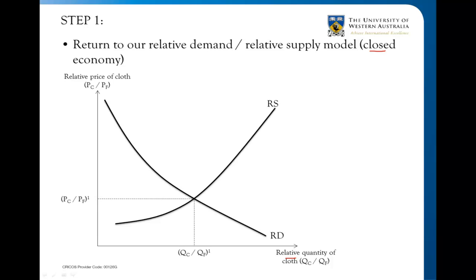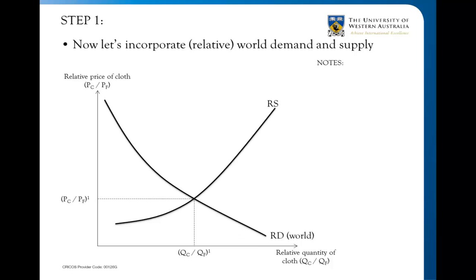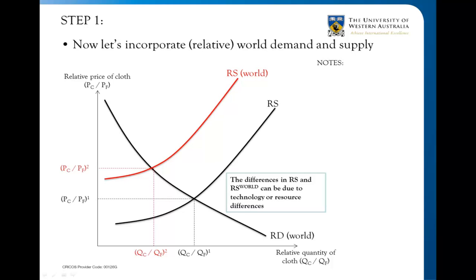In a closed economy we get that relative price and that relative quantity. Now what we want to do is look at what happens when we introduce world demand and supply — open the economy up. A few things to note: I've placed the relative world supply curve up and to the left. Remember this is relative, not absolute — we're not saying that the supply of cloth decreases. The relative supply curve could of course be located on the other side.